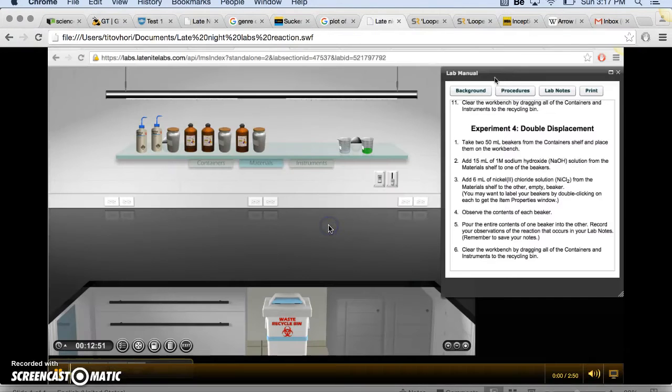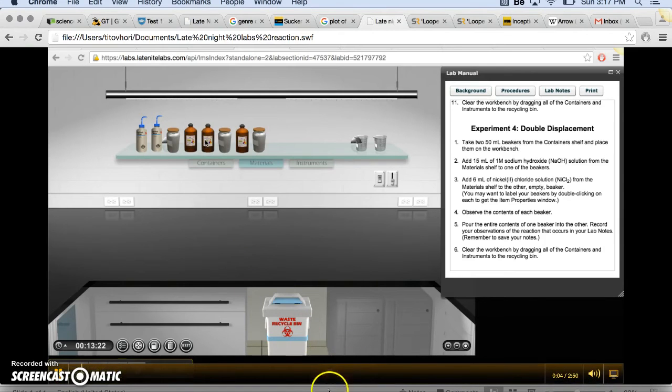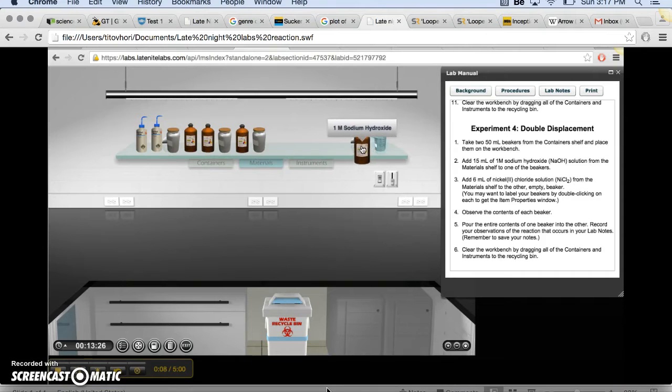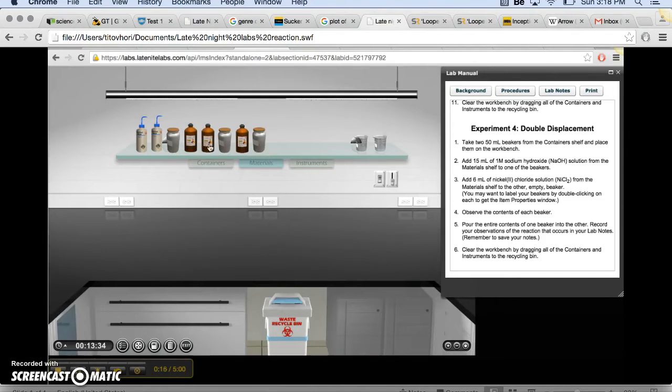Today we're going to be doing the reaction of nickel chloride and sodium hydroxide in solution. The first thing we're going to do is set up two 50 milliliter glass beakers, and we're going to take one molar sodium hydroxide and put 15 milliliters of it in our first 50 milliliter beaker.